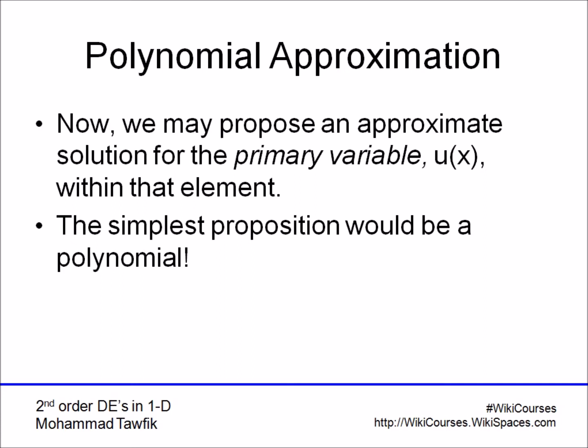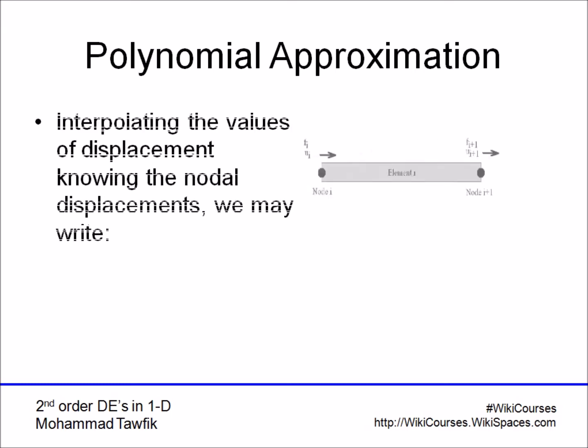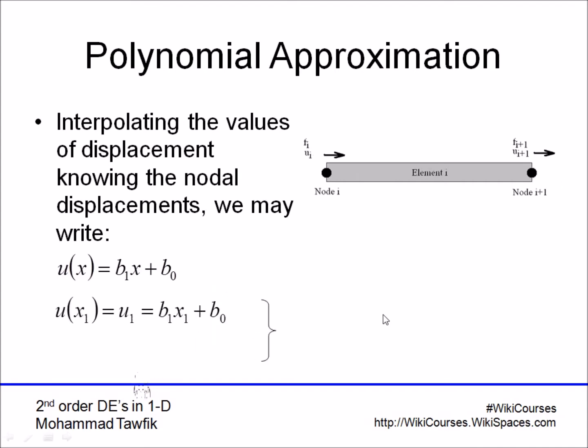So, since we know the boundaries, u1 and u2, a simple polynomial with a linear form needs to be used. Here, we propose b0 plus b1x, substituting with the values u1 at x1 and u2 at x2. We'll get two equations that can be solved for the coefficients b1 and b0. However, let's just rearrange the terms in order to get them to look like what we called the Lagrange polynomial.